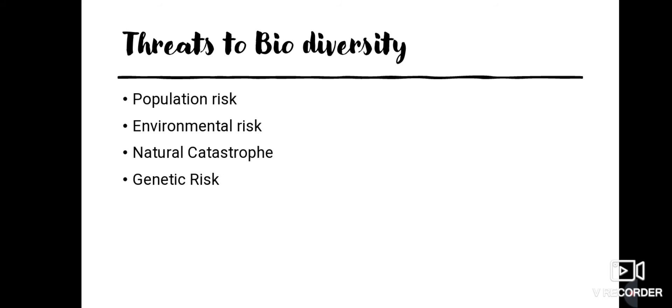Now we can move into the main topic: threats to biodiversity. The elimination, extinction, or destruction of species is often seen in biodiversity loss. The causes of destruction can be classified into four types. The first is population risk — random variation in population size causes low abundance that can lead to extinction.